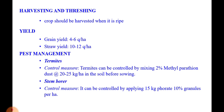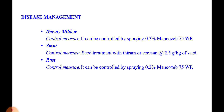Pest management: to control termites, mix 2% methyl parathion dust at the rate of 20 to 25 kg per hectare in the soil before sowing. Stem borer is controlled by applying 15 kg of Folidol 10% granules per hectare. Disease management: downy mildew is controlled by spraying 0.2% Mancozeb 75 wettable powder. Smut disease is controlled by seed treatment with Thiram or Ceresan at the rate of 2.5 grams per kg of seed. Rust is controlled by spraying 0.2% Mancozeb 75 wettable powder.